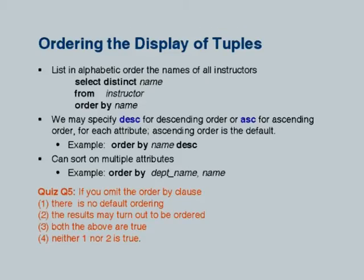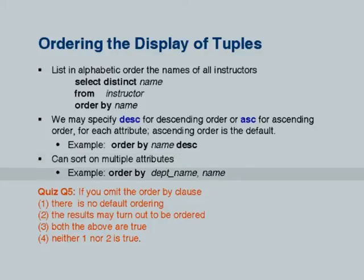To change the ordering, you can say ORDER BY name DESC for descending order. To order by multiple attributes — for example, sort by department_name and within each department sort alphabetically by name — you can say ORDER BY dept_name, name. You can also mix ascending and descending: ORDER BY dept_name DESC, name ASC. Descending and ascending can be abbreviated to DESC and ASC. The ORDER BY clause is applied after all other clauses (SELECT, FROM, WHERE) have been processed.